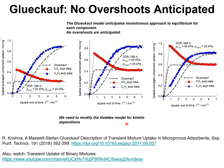In order to cater for these transient overshoots that are of importance in kinetic separations, we need to modify the Geddes model by use of the Maxwell-Stefan formulation instead of the Fickian formulation. My paper published in Separation and Purification Technology in 2018 shows how the Geddes model can be adapted to handle kinetic separations.